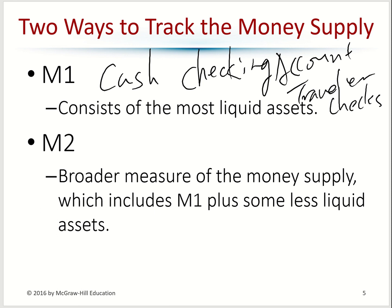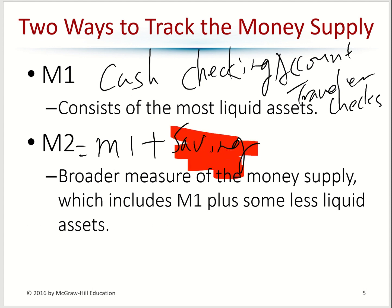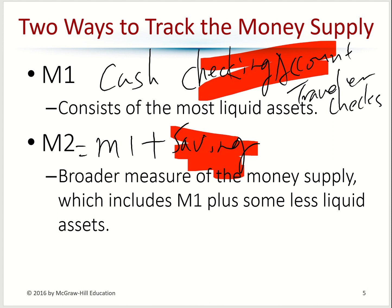M2 is everything in M1 plus your savings account. For M2, the savings portion — you cannot turn it into cash quickly. Most savings accounts have restrictions on how much cash you can withdraw, so that's in M2 but not M1. Your checking account is in M1 because there are usually no restrictions on how much you can withdraw or how often. So M1 is very liquid, M2 is not as liquid, but M1 is included in M2.